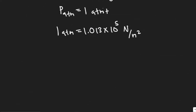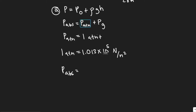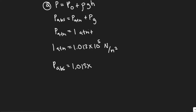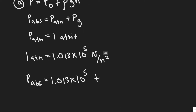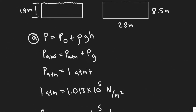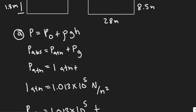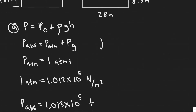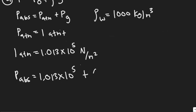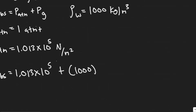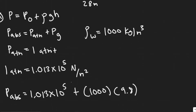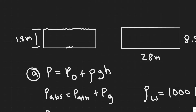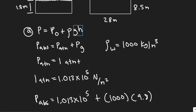Our absolute pressure equals atmospheric pressure — which is 1 atm, or 1.013 times 10 to the 5 — plus rho times g times h, our gauge pressure. Rho is the density of the fluid; since the pool is filled with water, rho equals 1,000 kilograms per meter cubed. G is the acceleration due to gravity, 9.8 meters per second squared. H is the height from the point to the free surface — since we're at the bottom of the pool, h equals 1.8 meters, measured vertically.